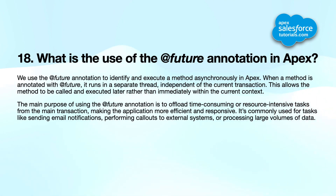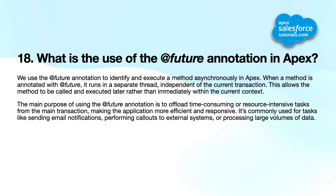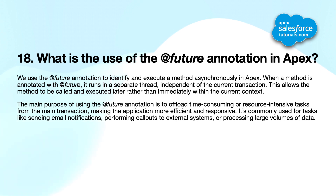Eighteenth question: what is the use of the @future annotation in Apex? We use the @future annotation to identify and execute a method asynchronously in Apex. When a method is annotated with @future, it runs in a separate thread, independent of the current transaction, and is executed later rather than immediately. The main purpose is to offload time-consuming or resource-intensive tasks from the main transaction, making the application more efficient. It's commonly used for sending email notifications, performing callouts to external systems, or processing large volumes of data.